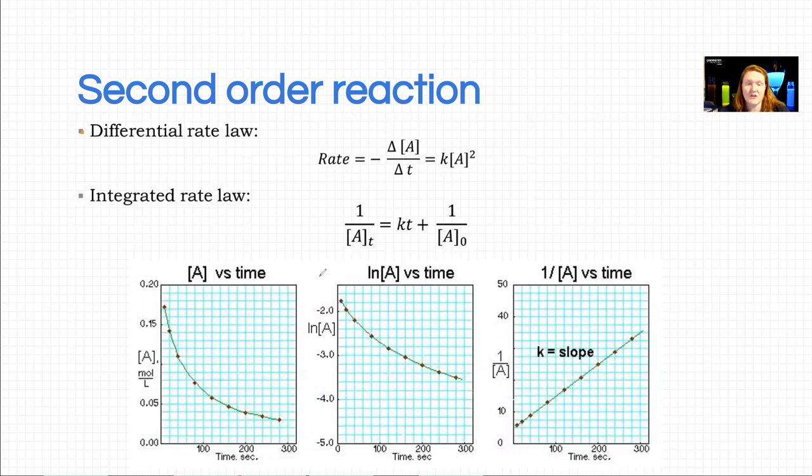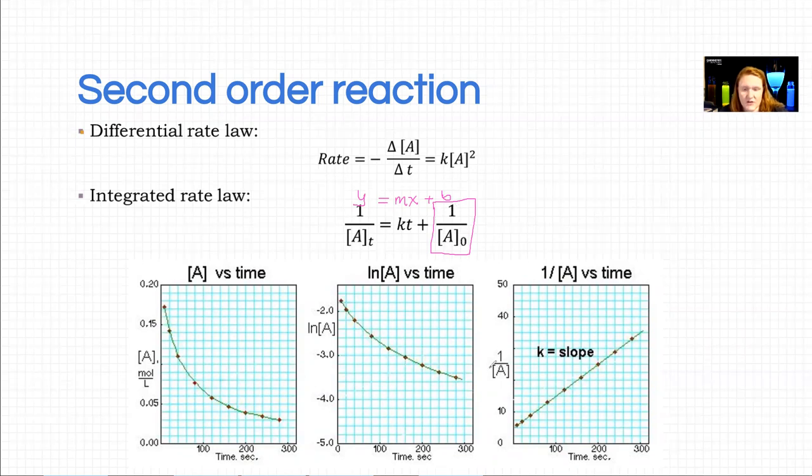I provide this integrated rate law to you, but you need to know when to apply it. You have to know that it's a second order reaction. Our intercept is about the initial concentration, so we're starting off with one divided by the initial. If the question is asking you what's your initial concentration, you can look on the graph, figure out what this number is, and then invert it.